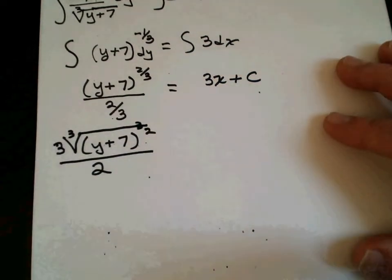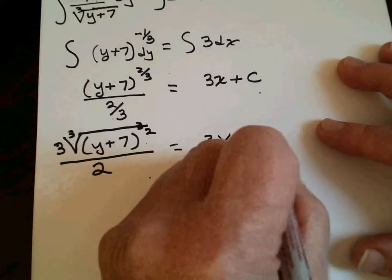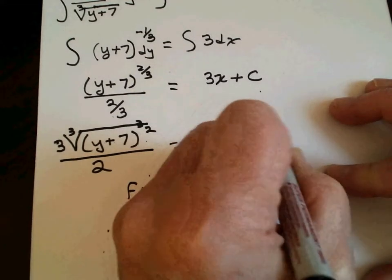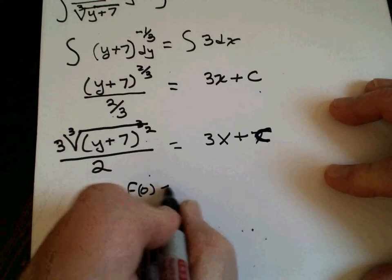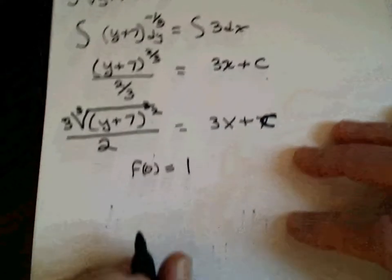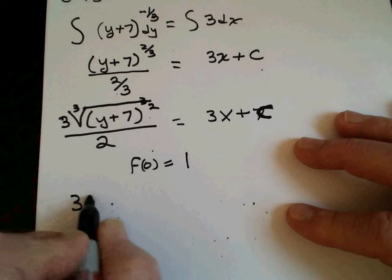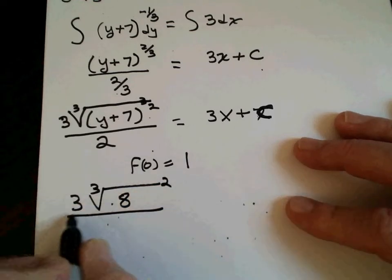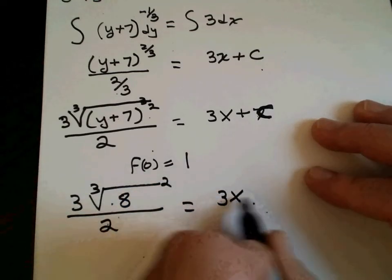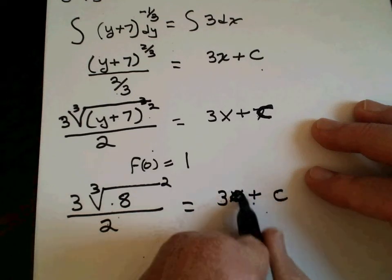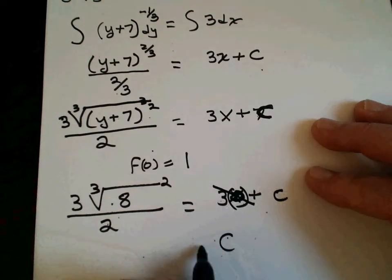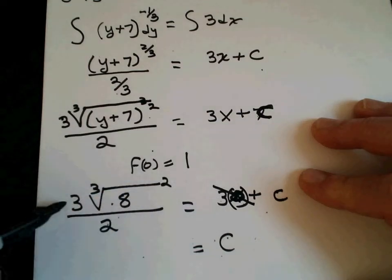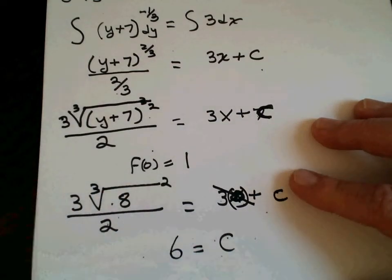So we're going to continue: 3/2 times (y+7)^(2/3) is equal to 3x plus c. Using f(0) = 1: we've got 3/2 times cube root of 8 squared equals 3(0) plus c. Cube root of 8 is 2; 2 squared is 4; 4 times 3 is 12; 12 divided by 2 is 6. So c equals 6.